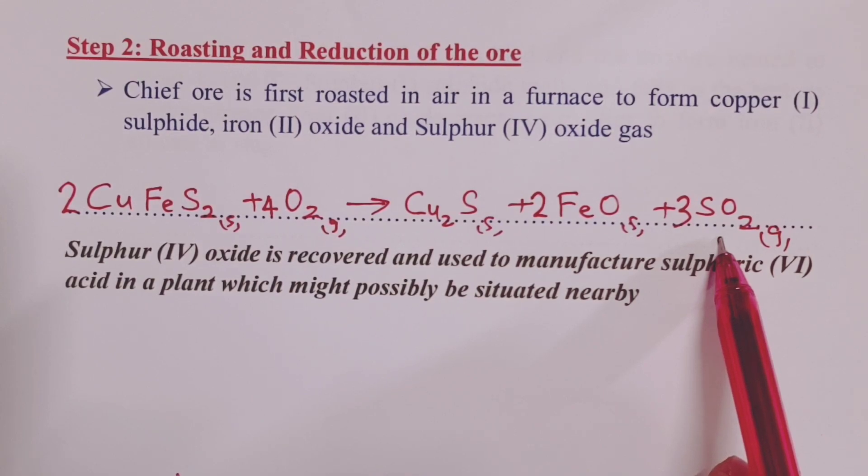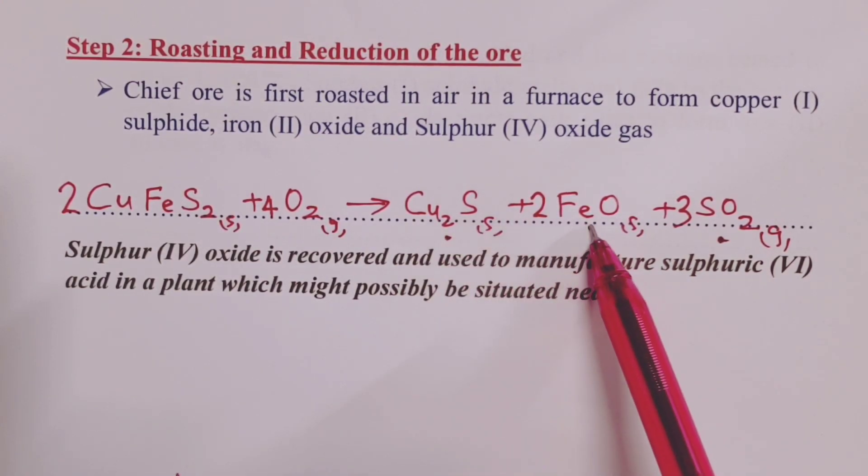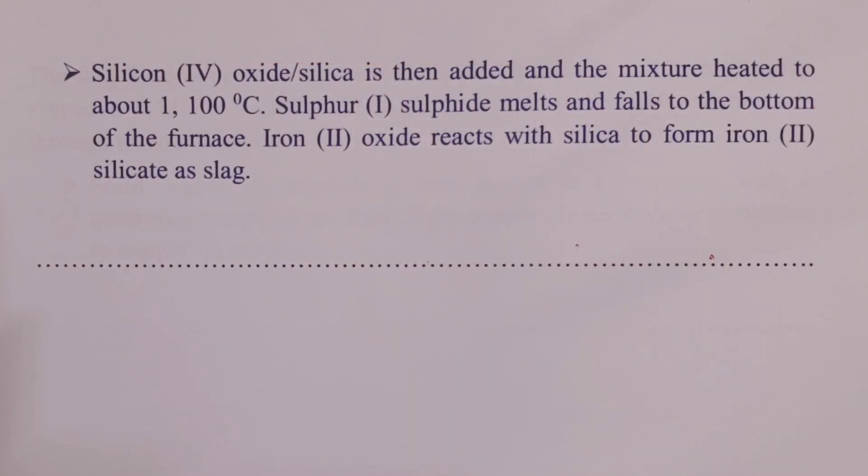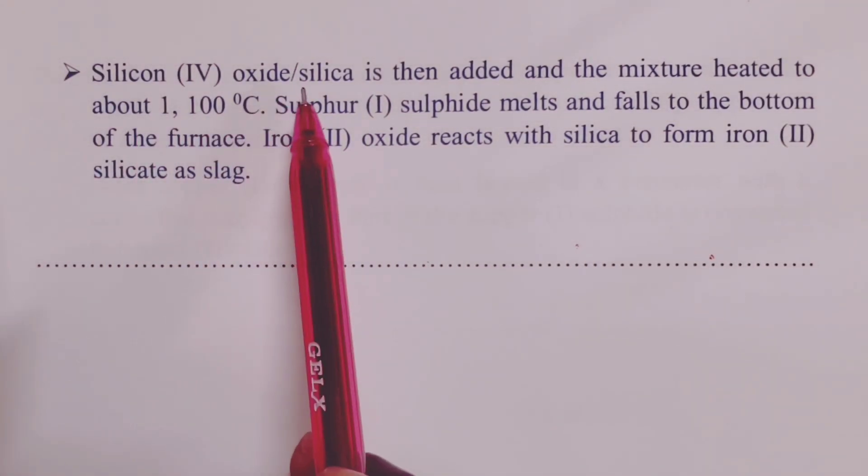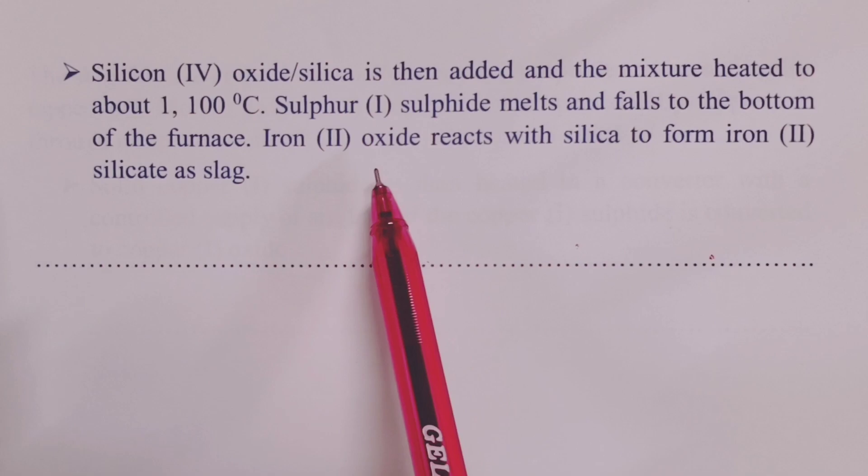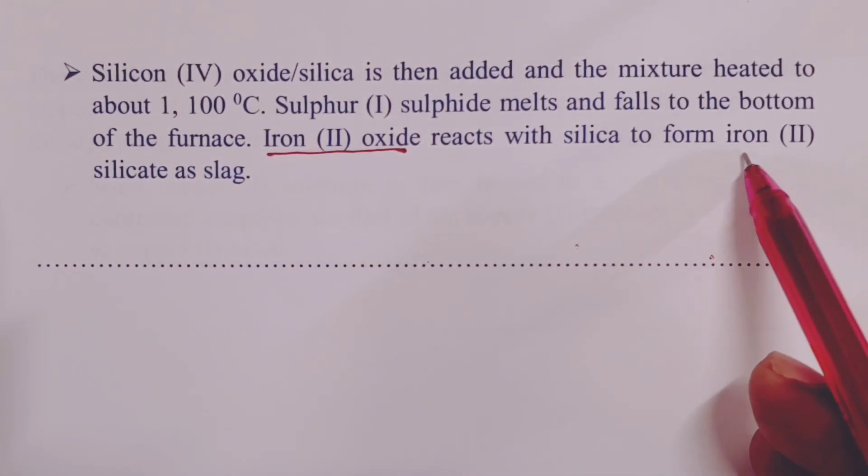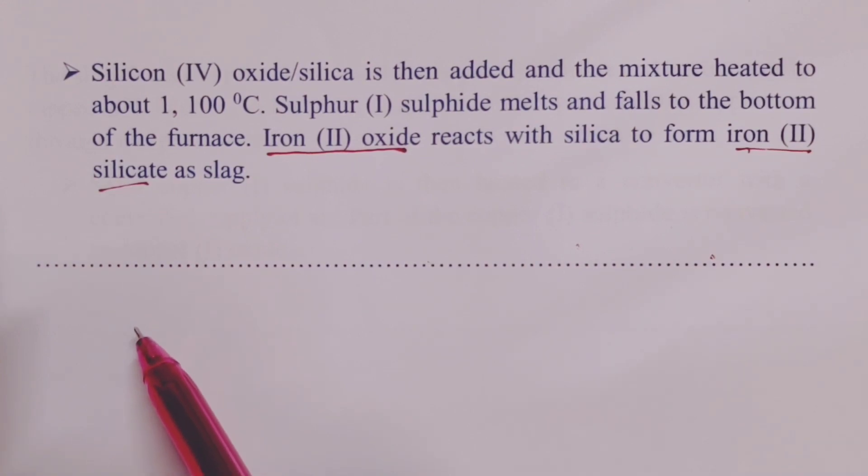If we are asked of a possible plant or industry that can be established near copper mines, someone should think of the contact processing plant that sorts out the issue of sulfur-4-oxide gas. In our next step, we will have to find a way of separating copper-1-sulfide from iron-2-oxide. To do so, we introduce silica or silicon-4-oxide.